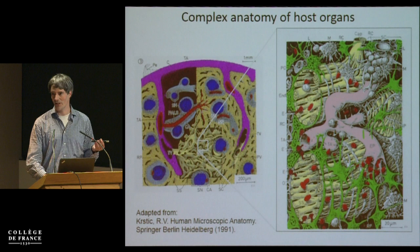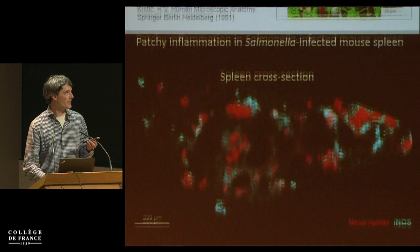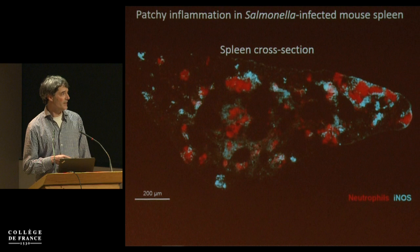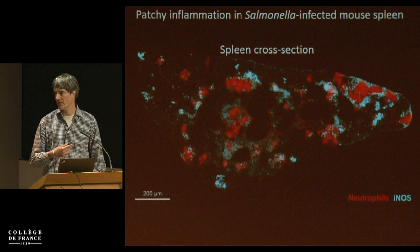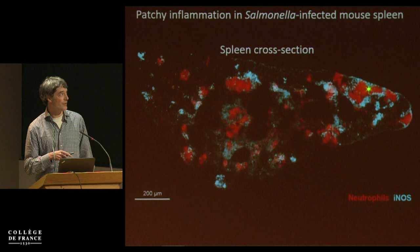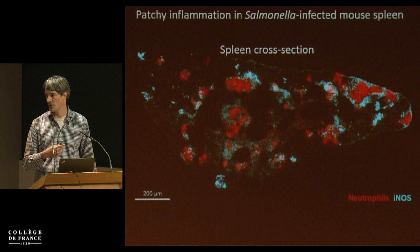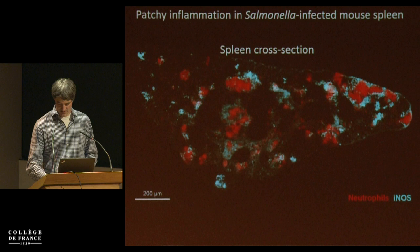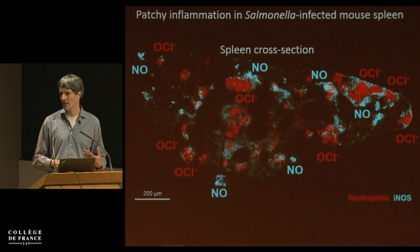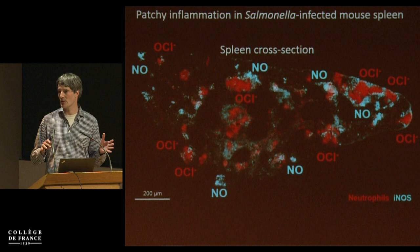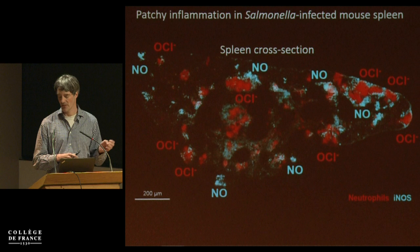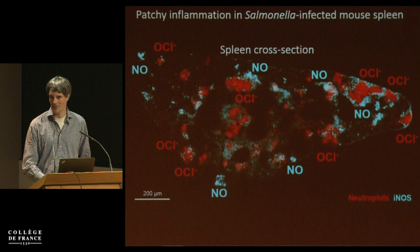During infection, this becomes even more chaotic because the infection process induces further changes. This is a cryosection of an infected mouse spleen. In red are the neutrophils — the first line of cellular defense against infection. They infiltrate the spleen and form these lesions or abscesses. Around them, monocytes come and produce high levels of inducible nitric oxide synthase. These two cell populations make highly important small molecules that will affect bacterial life.